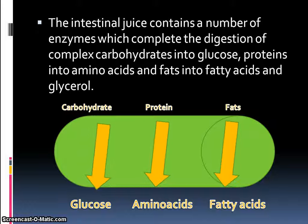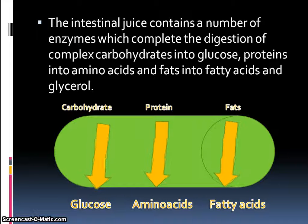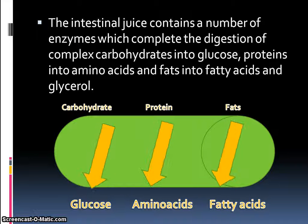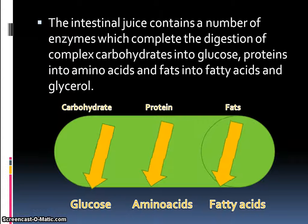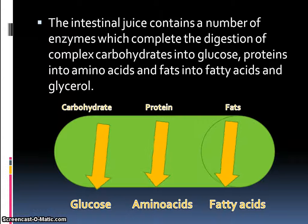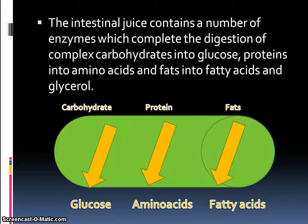The intestinal juice contains a number of enzymes that complete the digestion of complex carbohydrates into glucose, proteins into amino acids, and fats into fatty acids and glycerol.